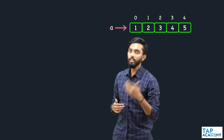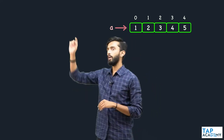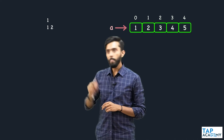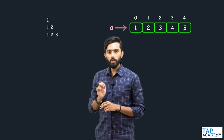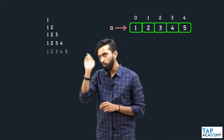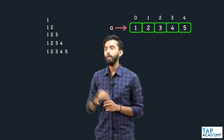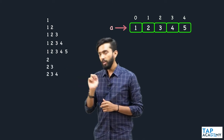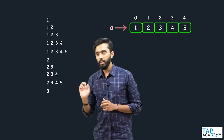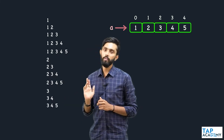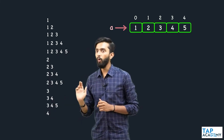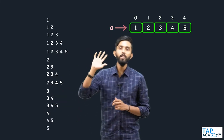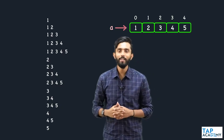Let me list all the sub arrays. Starting with: 1, 1 2, 1 2 3, 1 2 3 4, 1 2 3 4 5, then 2, 2 3, 2 3 4, 2 3 4 5, then 3, 3 4, 3 4 5, then 4, 4 5, and finally 5.